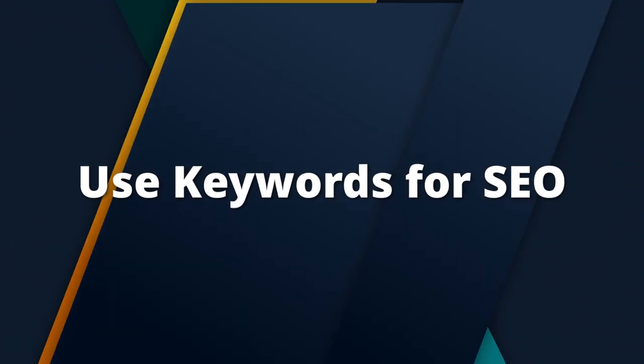First, use keywords for SEO. The first thing you want to do is use the right keywords. Think about what people are searching for when they're looking for content like yours. You can use tools like Google Trends or VidIQ to find relevant keywords. Make sure you're including these keywords naturally in your title to help your video rank higher in search results.